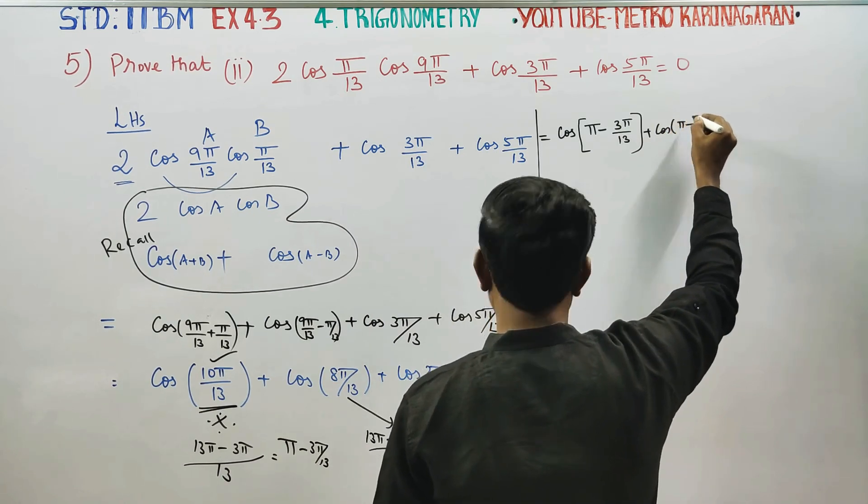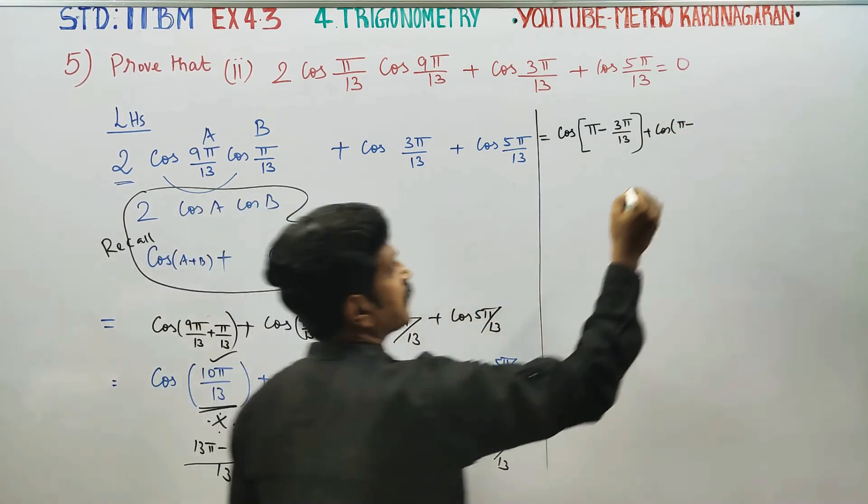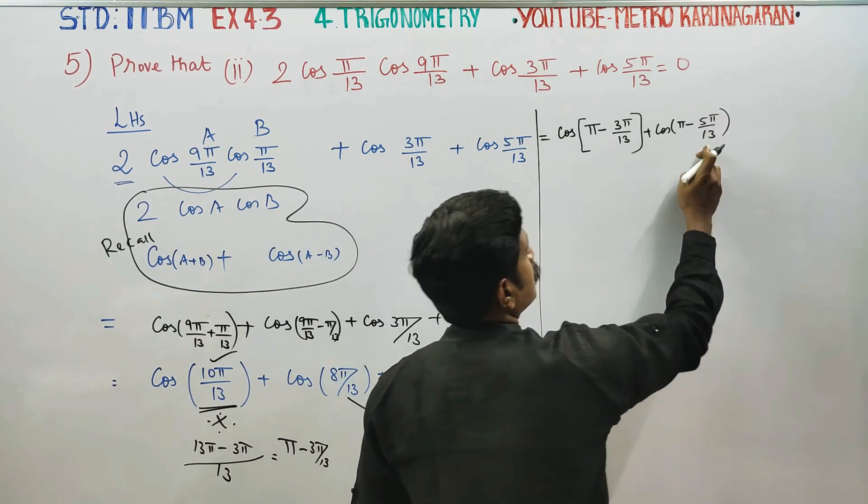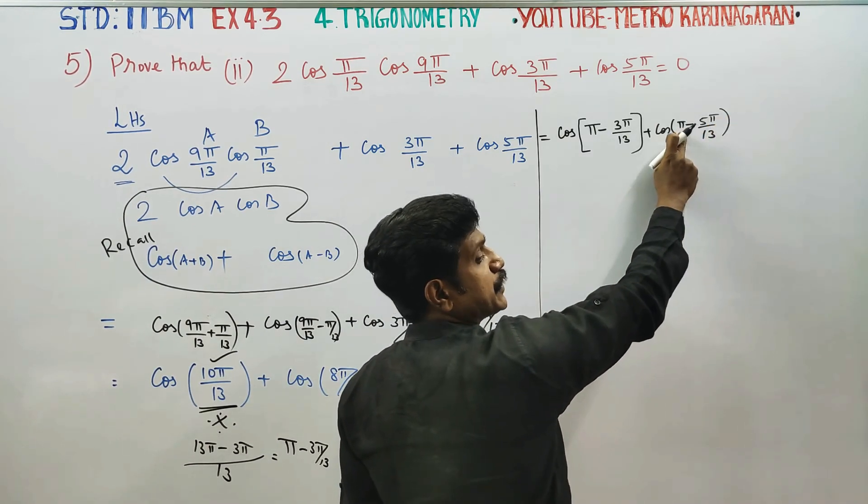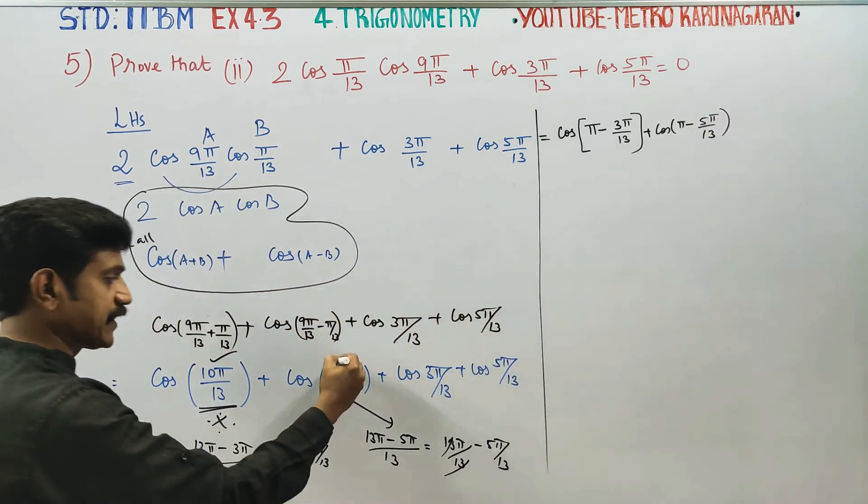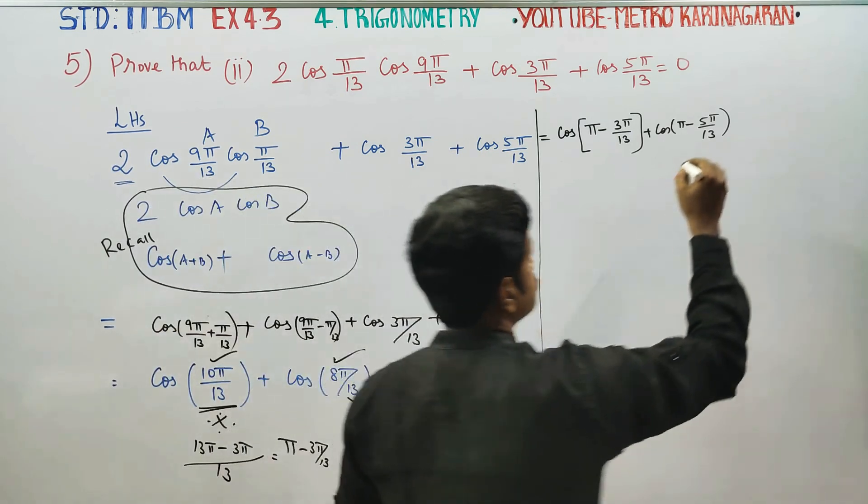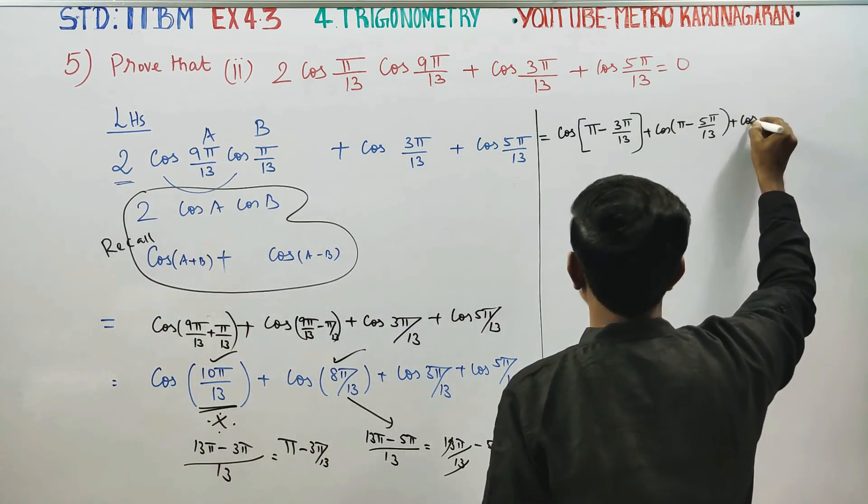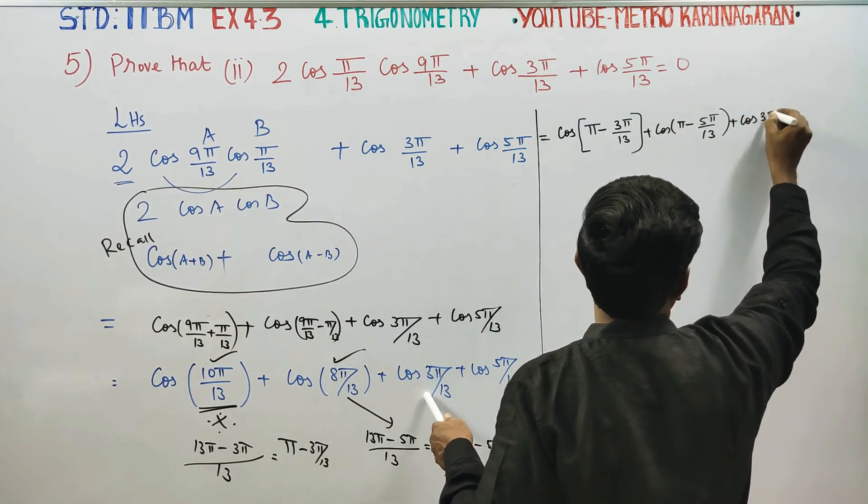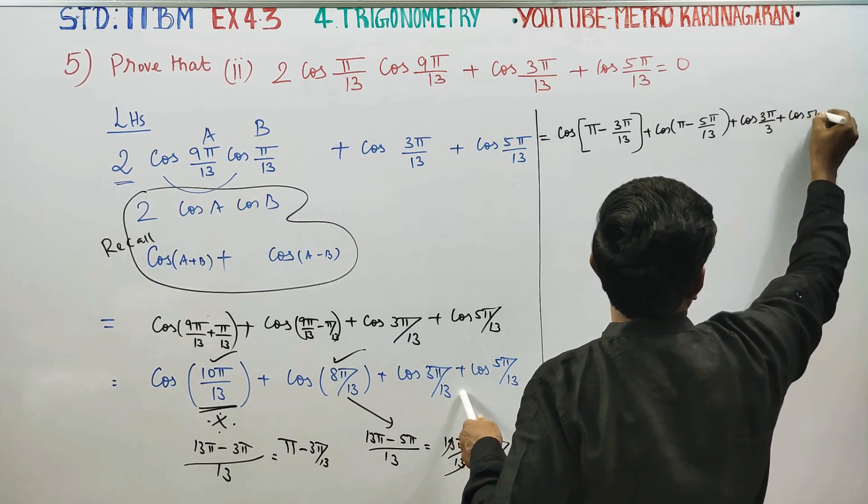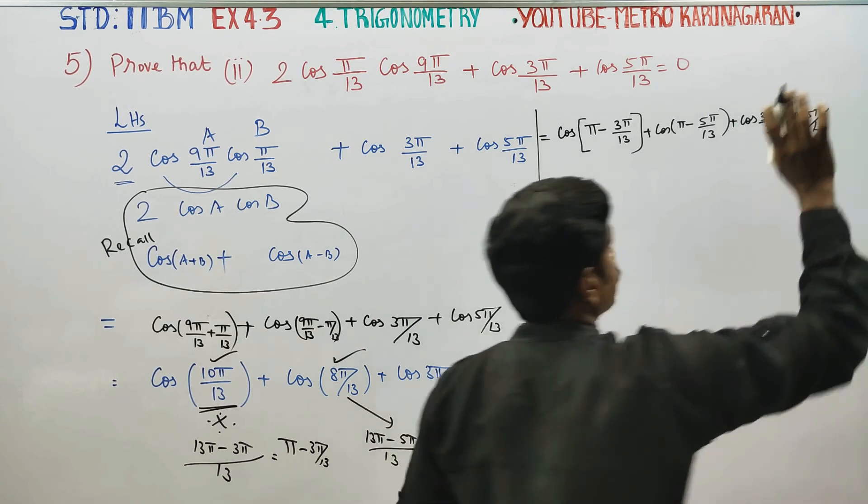Pi minus 5 pi by 13. You have doubt. Cross multiply. 13 pi, 13 pi, 5 pi, 5 pi. Correct. That's why. Plus cos 3 pi by 13, plus cos 5 pi by 13. This is 5 pi by 13.